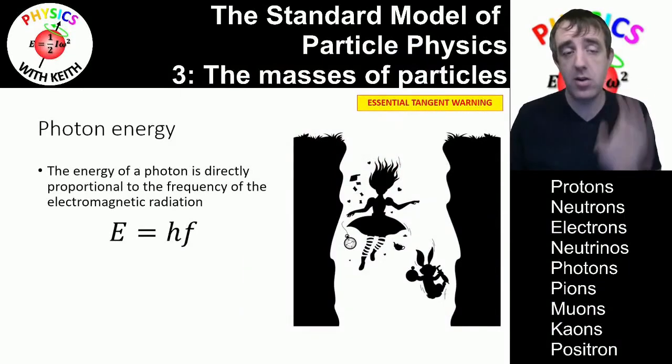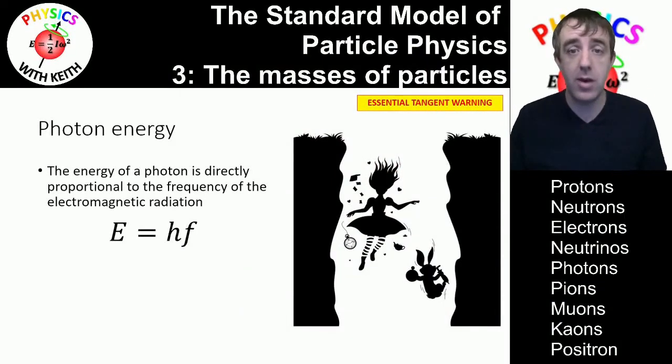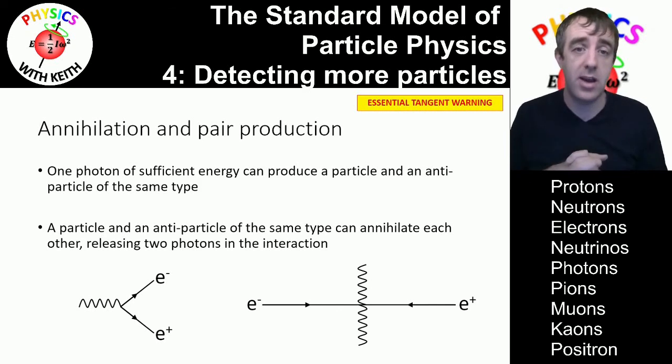In the last video, we mentioned pair production. We looked at the equation for photon energy, and we looked at the equation E equals mc squared. In this video, we're going to continue down that tangent.